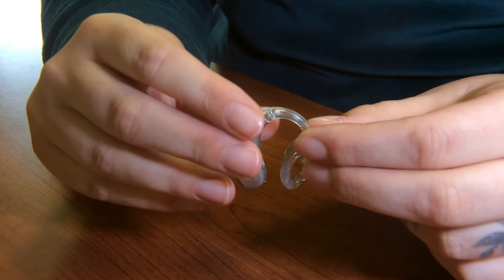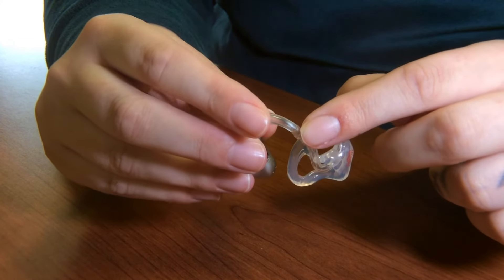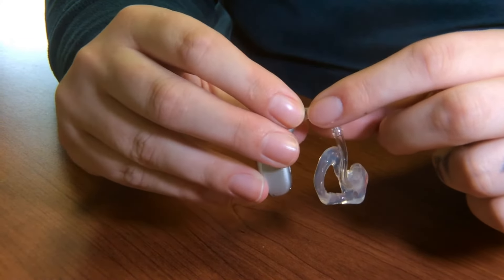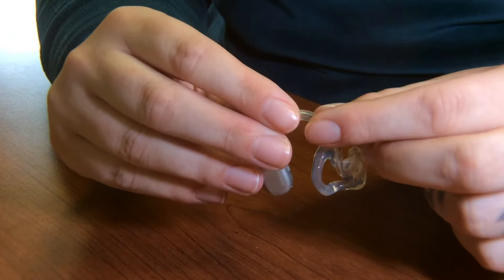Once you've cleared that, then you want to look at the tone hook, and you want to make sure that again, there's no cracks, there's no fractures in the casing, and that there is no debris that has made its way up into the tone hook.